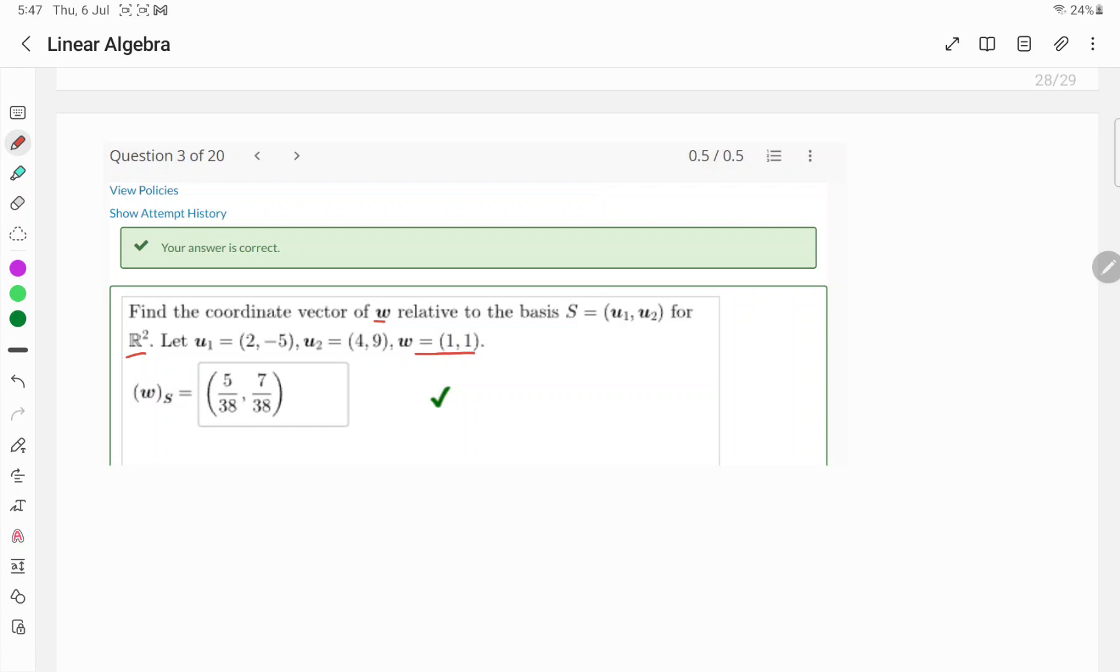So how can you get the coordinate vector W of S? You can write it like this, very simple. First consider 2 and 4, so write 2, 4, and then take this one. What we will do is write XY equals 1, and then -5, 9, 1.